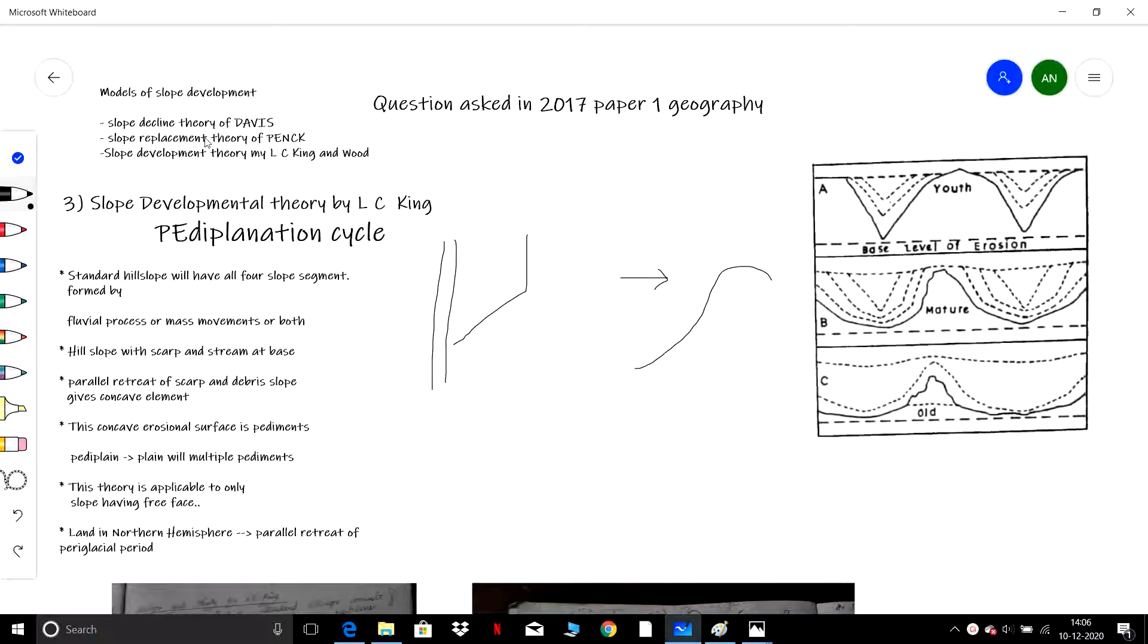In the previous parts, we discussed the slope decline theory by Penck, slope decline theory by Davies, and slope development theory by Wood.